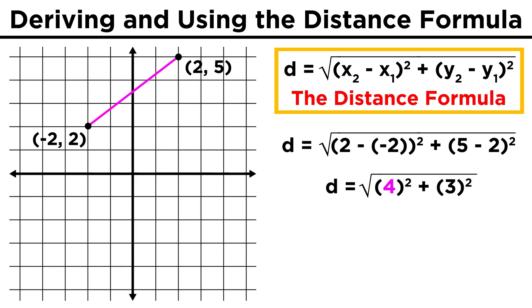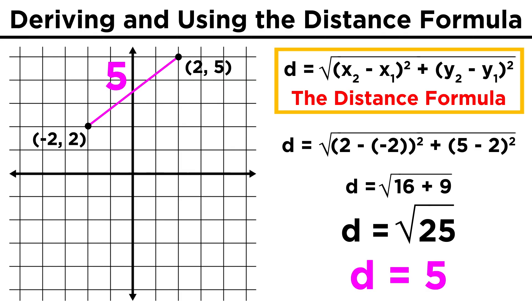That gives us four, which squared is sixteen, and three, which squared is nine. Add them up and we get twenty-five. Take the square root, and that gives us five for the distance.